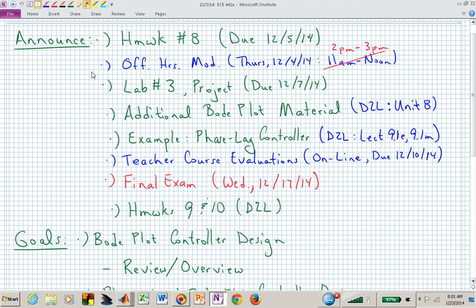If you need more material, there's introductory Bode Plot material in Unit 8. After last lecture, I recorded a couple more videos. 9.1E develops the formula for the steady state error and velocity gain constant, and 9.1M is a MATLAB-helped example for sketching Bode plots and finding stability margins after computing the phase lag controller. You have the notes and video available on D2L in the appropriate unit locations.